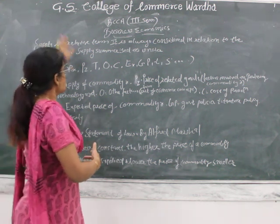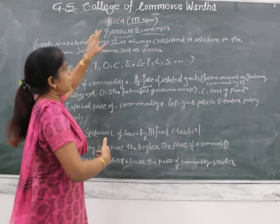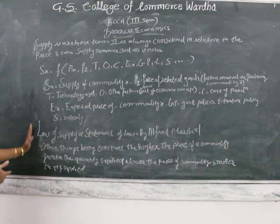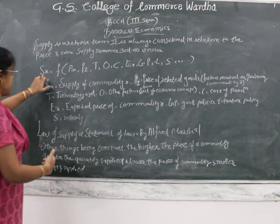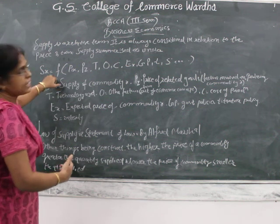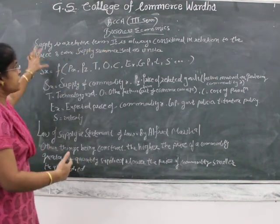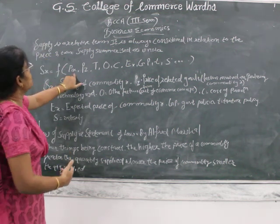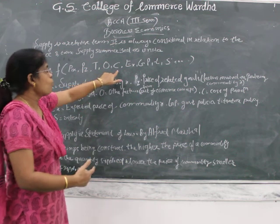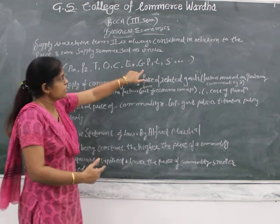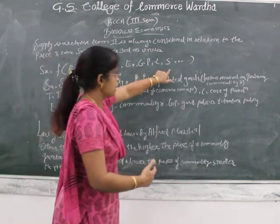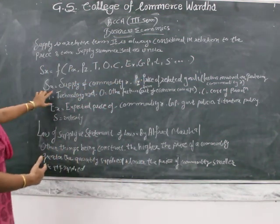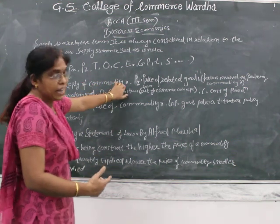Supply is summarized as: Sx = F(Px, Pz, T, O, C, EX, GP, T, S). Here, Sx is the supply of commodity X. It is a relationship between price and time, incorporating several factors which we will now explain.